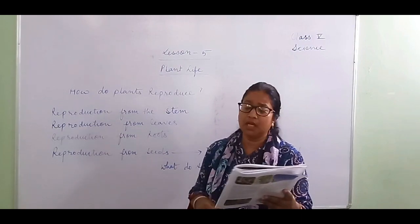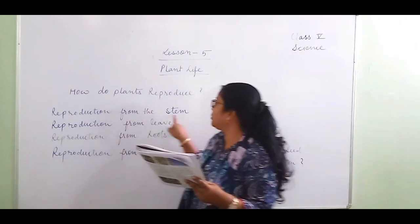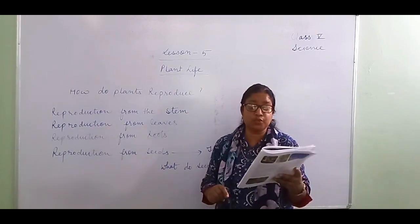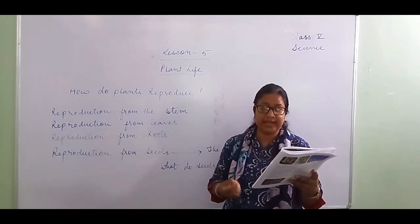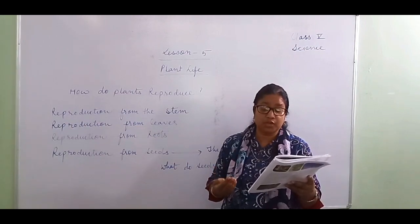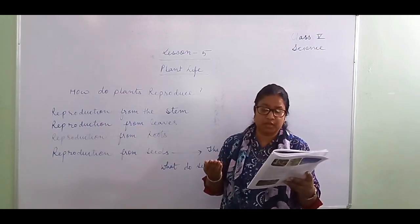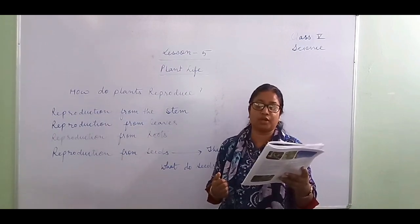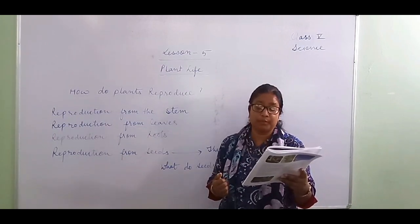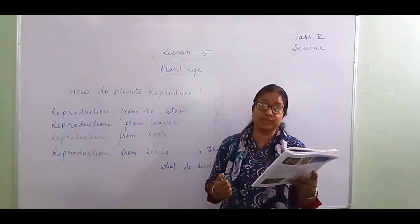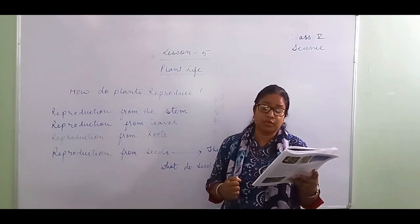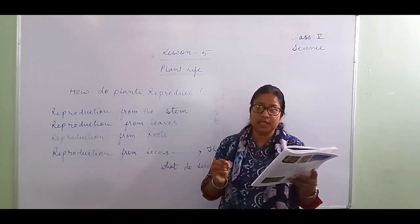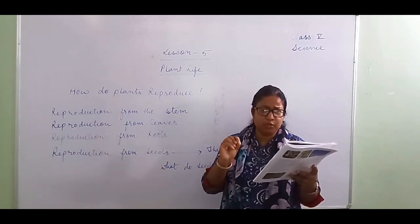Reproduction from the stem — you may have seen new shoots emerging from potatoes or ginger stored in your kitchen. Potato and ginger are underground stems. These can grow into new plants.